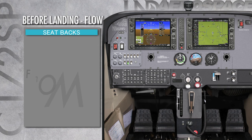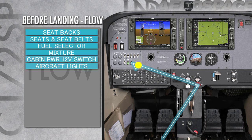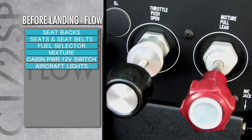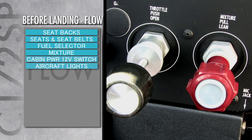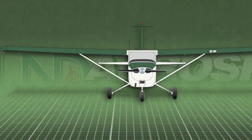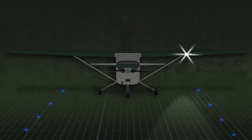This checklist contains the following items: pilot and passenger seat backs in the most upright position; seats and seat belts secured and locked; fuel selector, both; mixture set for the best performance during landing, rich or as appropriate for density altitude; cabin power 12-volt switch, off; aircraft lights — for day, pulse light on; at night, taxi and landing lights on, pulse light selected off.